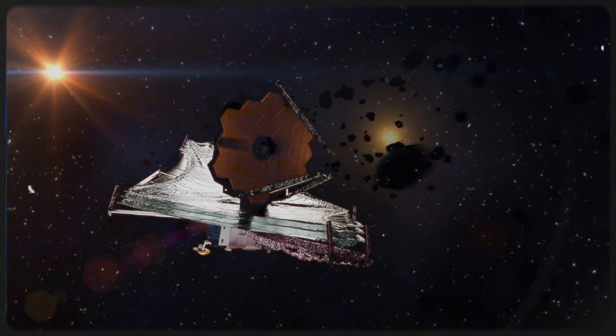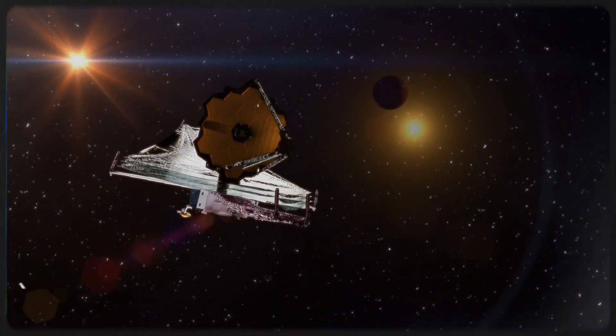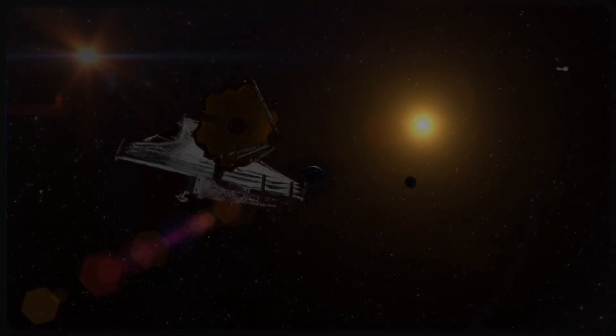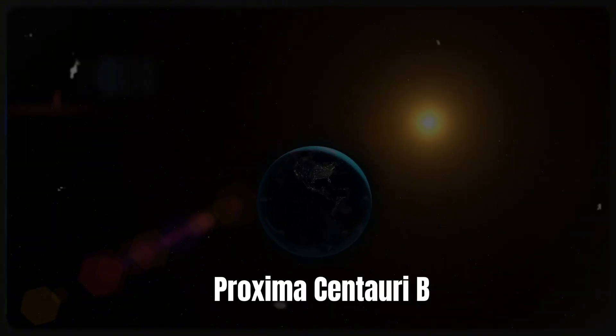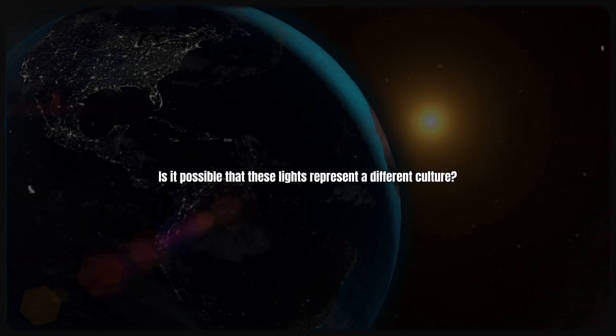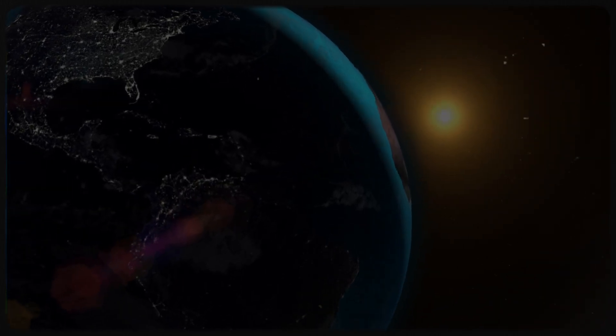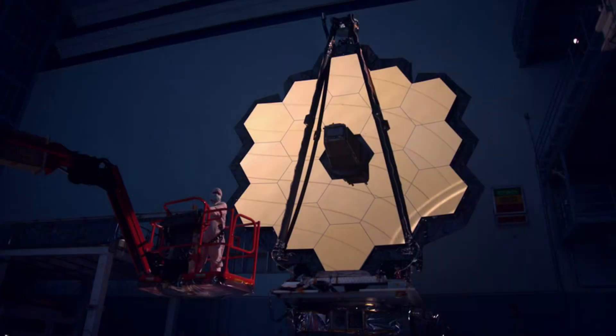The prospect of extraterrestrial life has been piqued by this finding. Strange, brilliant lights were discovered when the telescope focused on Proxima Centauri B, the exoplanet nearest to our solar system. Is it possible that these lights represent a different culture? We can learn a lot about these phenomena that will alter our cosmic perspective by investigating how the James Webb Telescope found them.